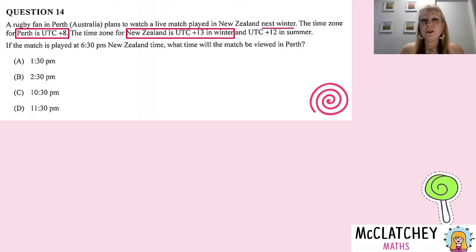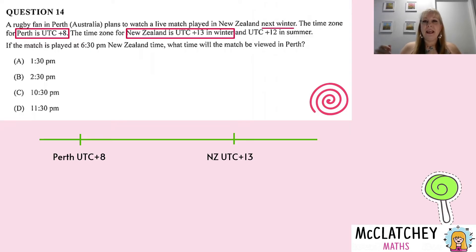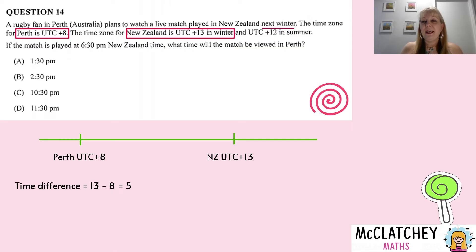I also find it helpful to draw a little timeline. Here's my timeline — I could extend it all the way back to zero if I wished. What I can see is that New Zealand is right at the end and Perth is at the other end, which means New Zealand's time is ahead. I'm going to calculate the time difference by subtracting: 13 take away 8 gives a five-hour time difference.